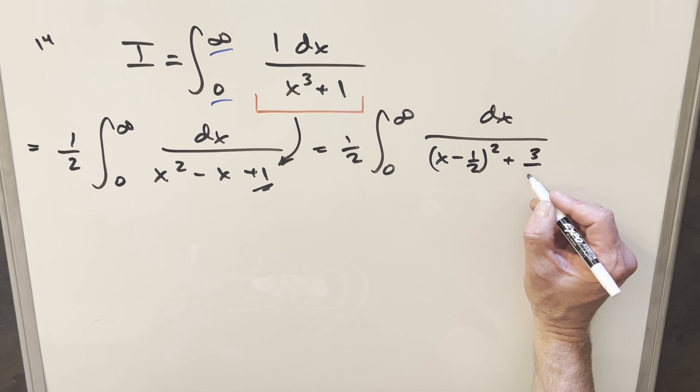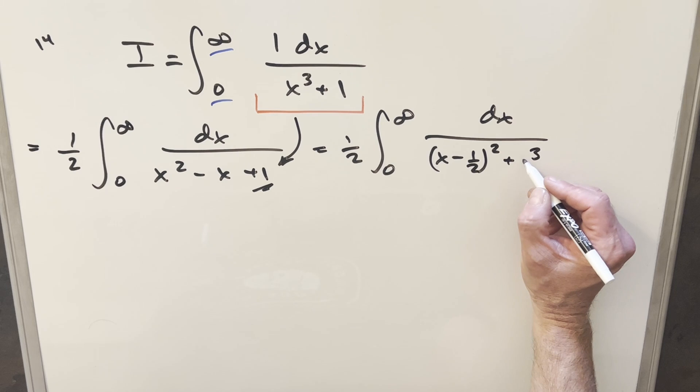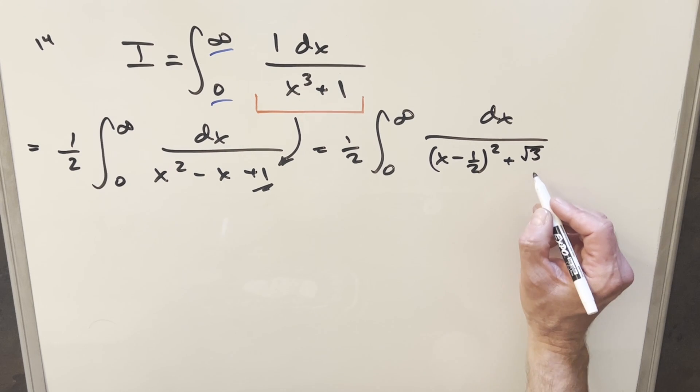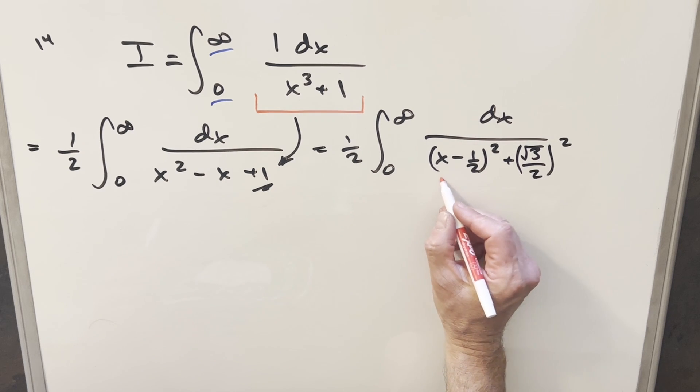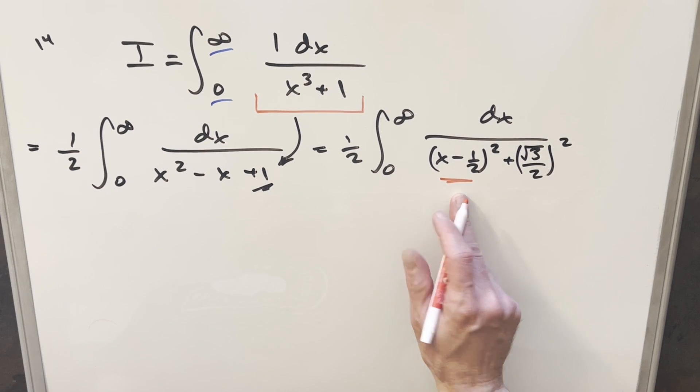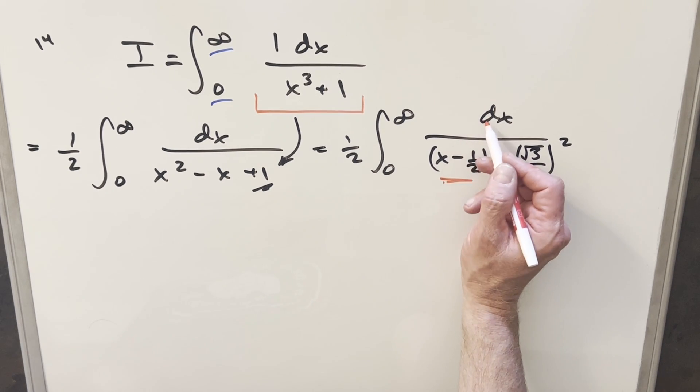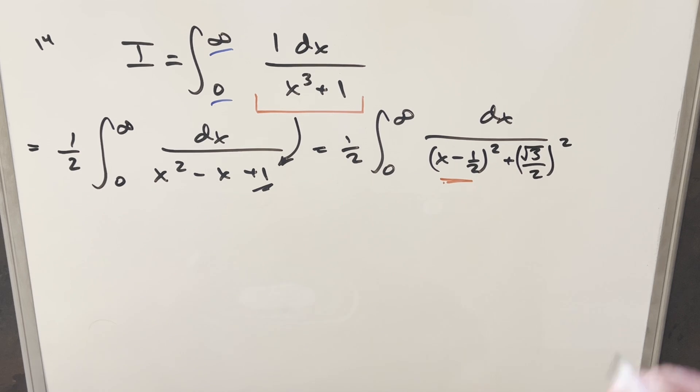I want to write this as a square, so instead of writing 3 over 4. So what I'll do instead here is actually write this, instead of writing 3 over 4, I'll write this as square root of 3 over 2 all squared. But then now we're perfectly set up to use our Arctan formula. We don't need to do any u substitution because the derivative of this is just going to be 1 dx. So we can go right to the Arctan formula.